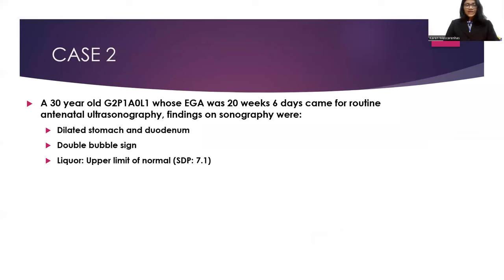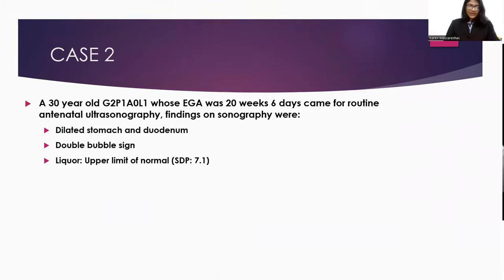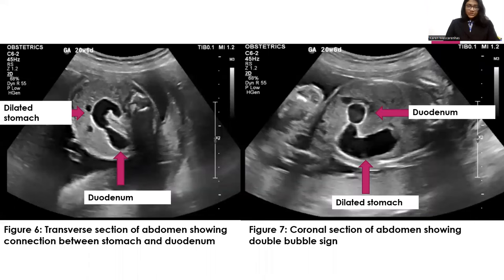My second case: a 30-year-old G2P1A0L1 with an estimated gestational age of 20 weeks and 6 days came for routine antenatal ultrasonography. Findings were a dilated stomach and duodenum giving the double bubble sign, and liquor in the upper limit of normal with a single deepest pocket of 7.1 cm. Images show a transverse section of the abdomen and a coronal section demonstrating the dilated stomach and duodenum giving the double bubble sign.